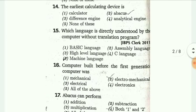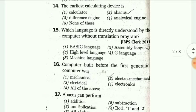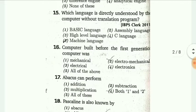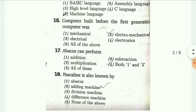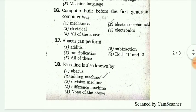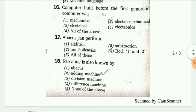The earliest calculating device is dash. The answer is abacus. Which language is directly understood by the computer without a translation program? The answer is machine language. The computer built before the first generation computer was electro-mechanical.